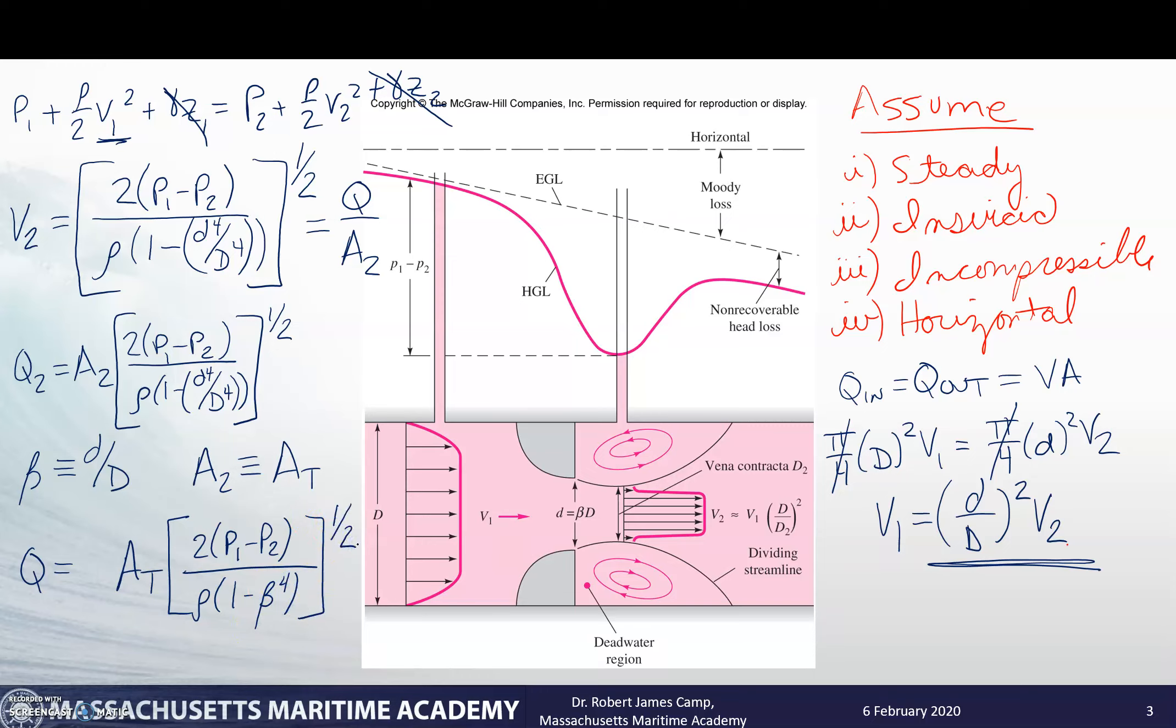That would be the flow rate equation for a perfect device - one that is steady, inviscid, and incompressible, horizontal. As we know, you're not going to get an inviscid flow in real life. There will be some friction. So what we add is Cd, the discharge coefficient, and that takes care of all of the frictional losses. That will be given to us by the manufacturer or we can look up and estimate what it's going to be.